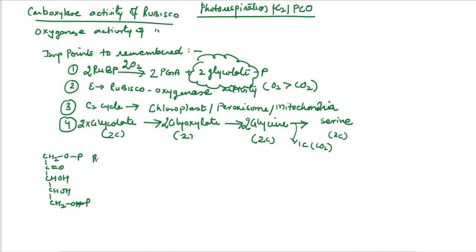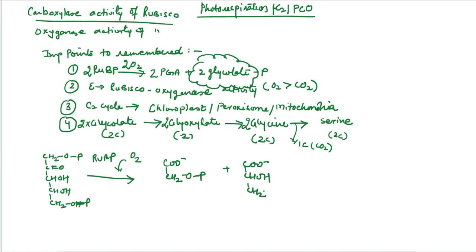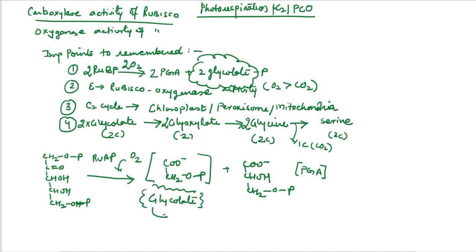This is RuBP. When one molecule of RuBP is oxidized, it produces phosphoglycolic acid: CH2O-phosphate, then COO-, CHOH, CH2O-phosphate — this is a three-carbon compound that we studied in the C3 cycle. This compound is glycolate, and on this basis the C2 cycle was named.